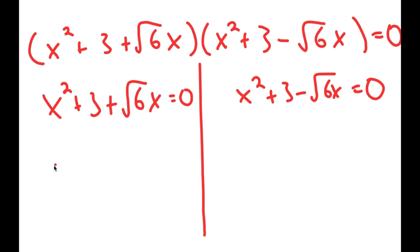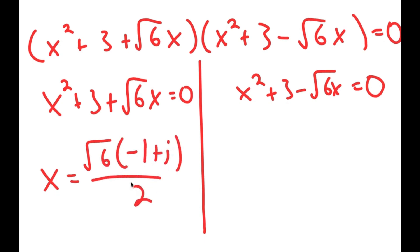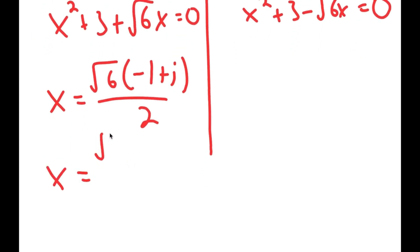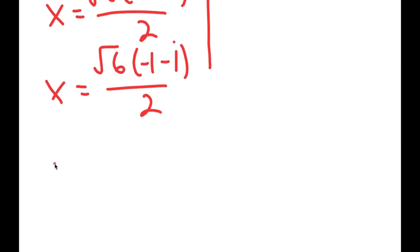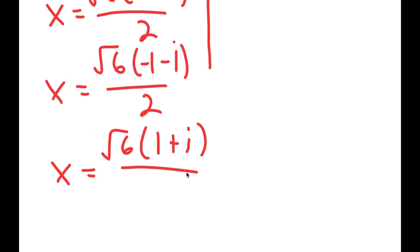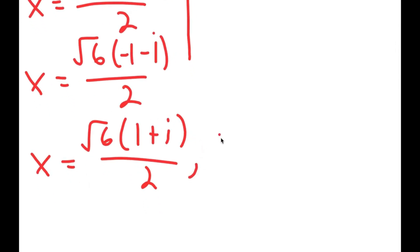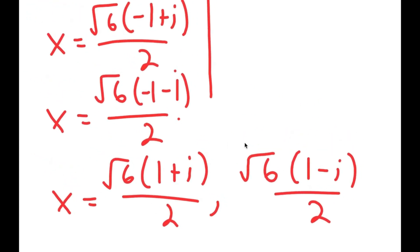You should get that x is equal to the square root of 6 times negative 1 plus i, over 2, and x is also equal to the square root of 6 times negative 1 minus i, over 2. Along with this you should get x is equal to the square root of 6 times i plus 1, over 2, and x is equal to the square root of 6 times 1 minus i, over 2. So these are your four solutions.